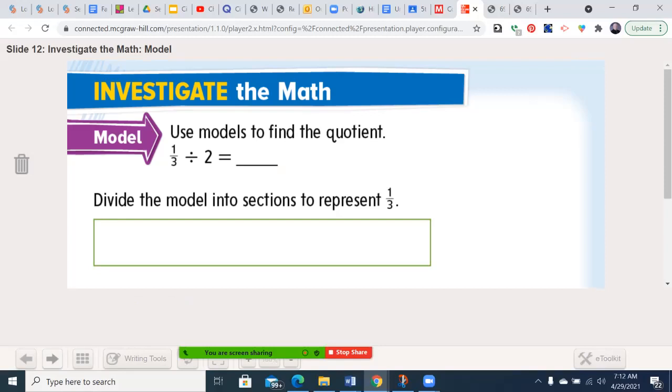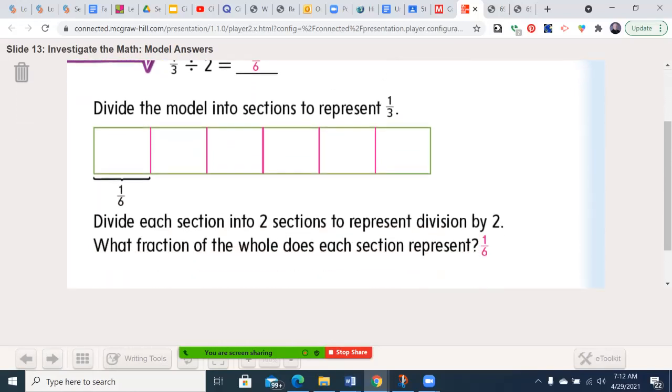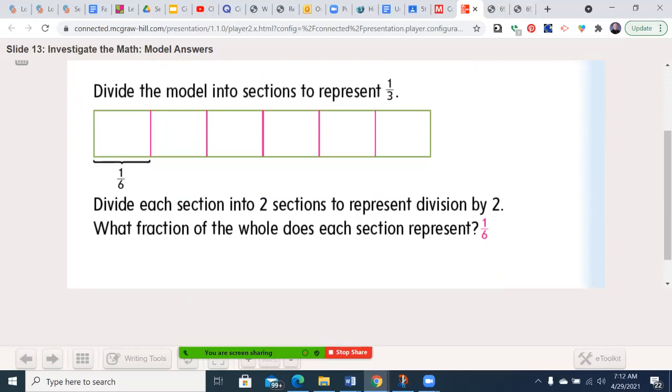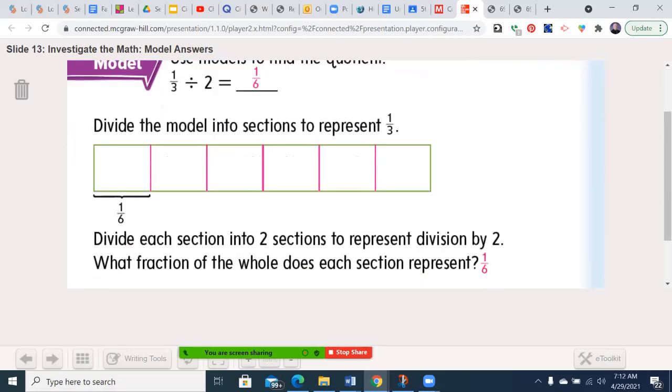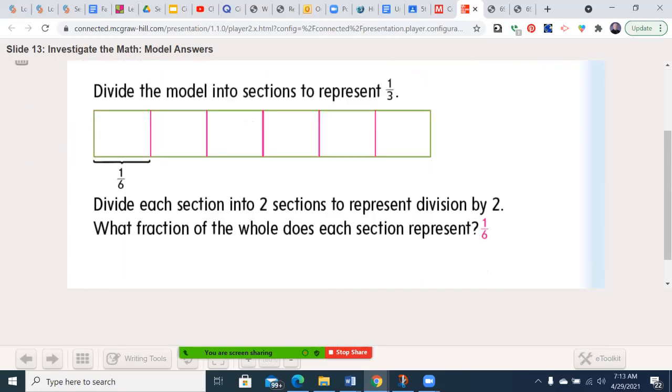Use models to find the quotient. So you see 1/3 divided by 2. I'm going to let them do the work here. Divide the model to represent 1/3, then divide each section into two to represent dividing by 2. So here's our thirds, we divided it by two, so now there's... once I do that, I double the number of sections and I get 1/6.